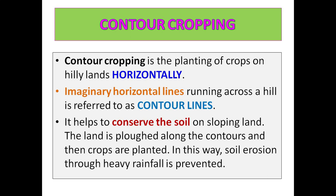Contour cropping is the planting of crops on hilly lands along horizontal imaginary lines running across a hill, referred to as contour lines. It helps to conserve the soil on sloping land. The land is plowed along the contours and then crops are planted; in this way, soil erosion through rainfall is prevented. Contours are imaginary lines that run across the hill, not up and down vertically.